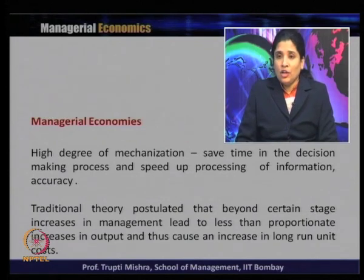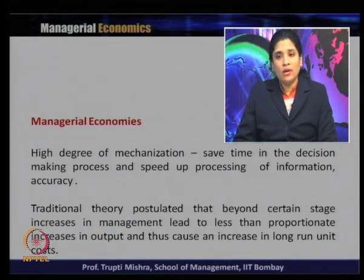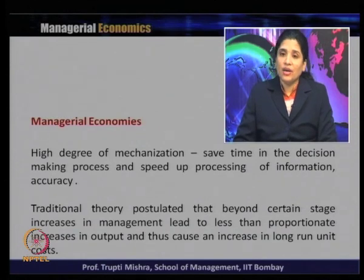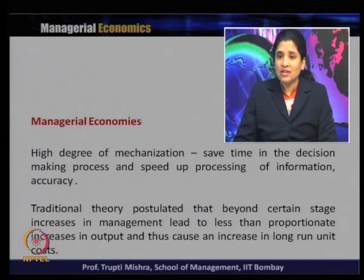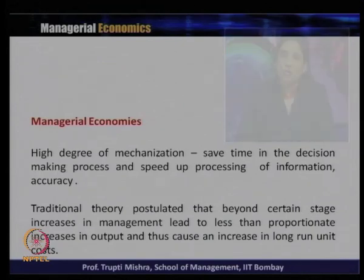Large plants and firms benefit from division of management, decentralized decision making, and high mechanization — all of which bring managerial economies of scale. However, traditional theory postulates that beyond a certain stage, increasing management leads to less than proportionate increases in output and thus causes an increase in long-run unit cost. The traditional view is that the advantages of specialization, mechanization, and decentralization only persist up to a point; beyond that, excessive management control takes an adverse direction, leading to managerial diseconomies of scale.